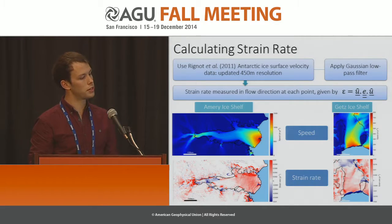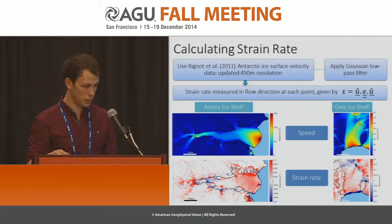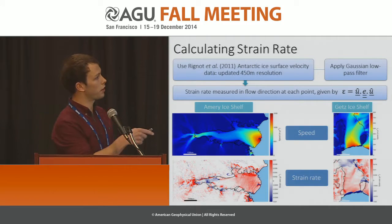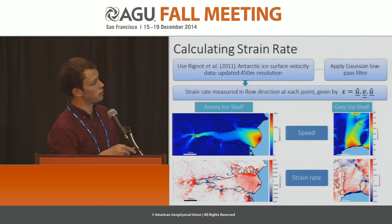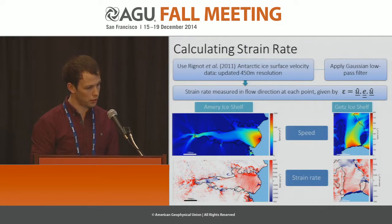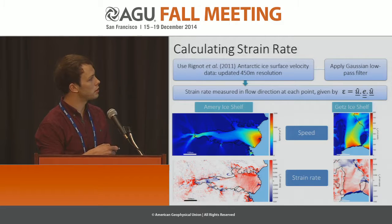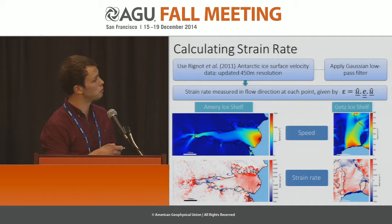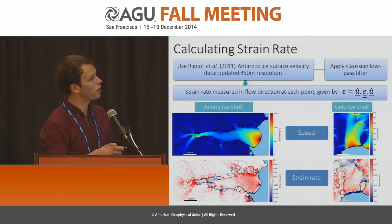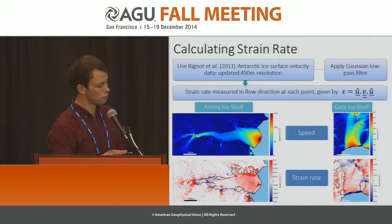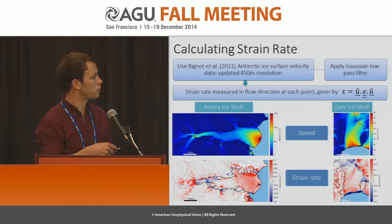From this, we can calculate a strain rate. We define the strain rate as the strain rate at each point aligned with the flow, given in vector notation as the unit vector dotted with the strain rate tensor dotted with the unit vector. For the Abbot ice shelf, we can see two plots in the bottom left: first is the speed, and we can see that as the ice flows over the grounding line, there is a high point in speed. However, the ice then slows down as the ice shelf becomes wider. There is then an acceleration in the final third of the shelf, and finally a peak in velocity at the calving front at the centre. In the lower plot, we see the strain rate.